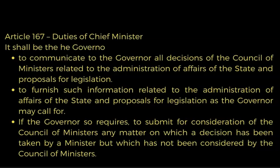Under Article 167, duties of the Chief Minister: it shall be the duty of the Chief Minister to communicate to the Governor all decisions of the Council of Ministers relating to the administration of affairs of the state and proposals for legislation. The Governor may also require the Chief Minister to submit for consideration of the Council of Ministers any matter on which a decision has been taken by a minister but which has not been considered by the Council of Ministers.